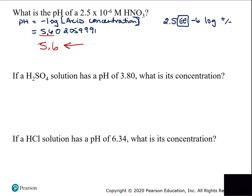Is a pH of 5.6 a strong acid, weak acid, neutral, strong base, or weak base? It's a mild acid — anything above 3 up to 6.99 is a mild acid, anything below 3 is a strong acid. Now, if a sulfuric acid solution has a pH of 3.80, what is its concentration? We know pH and want acid concentration.